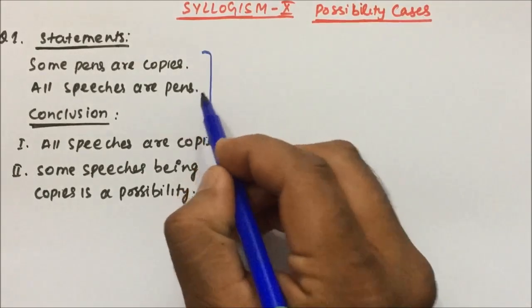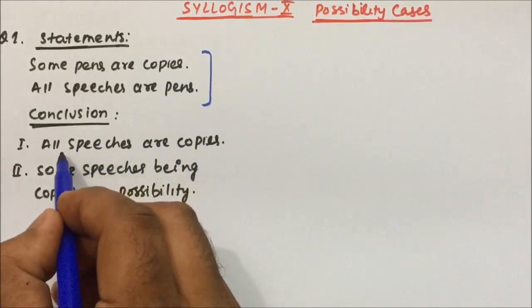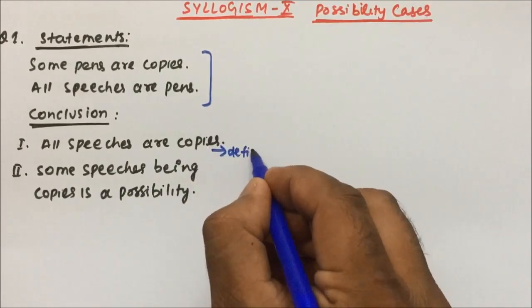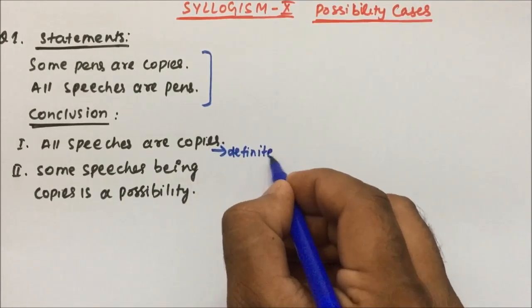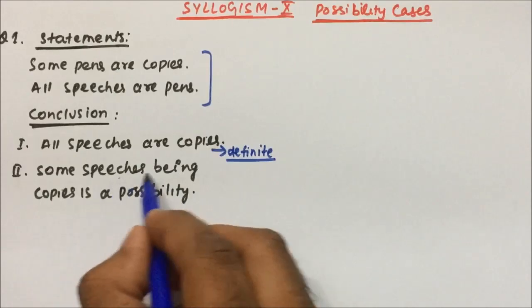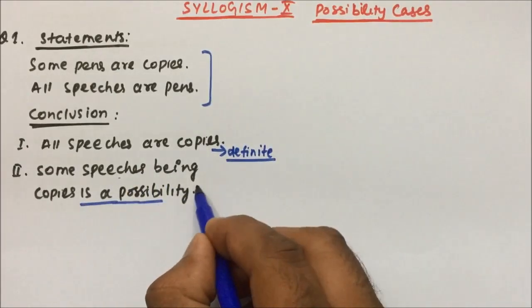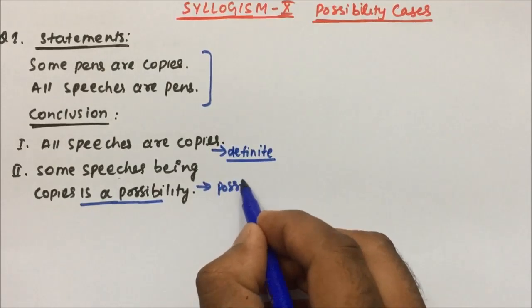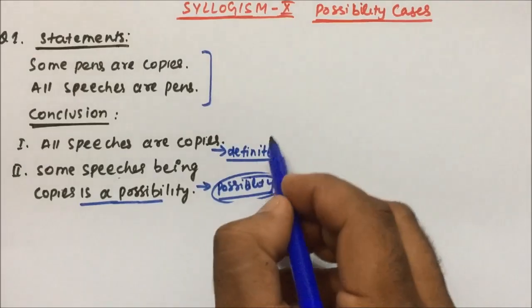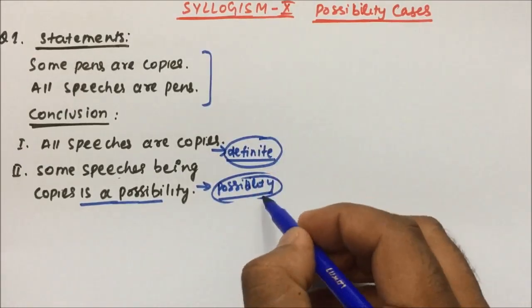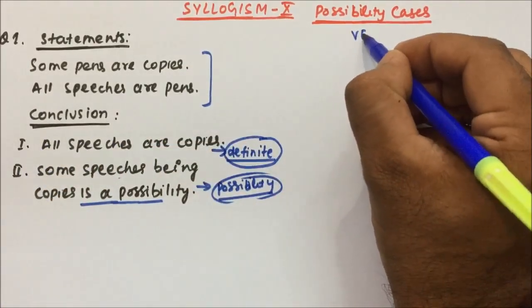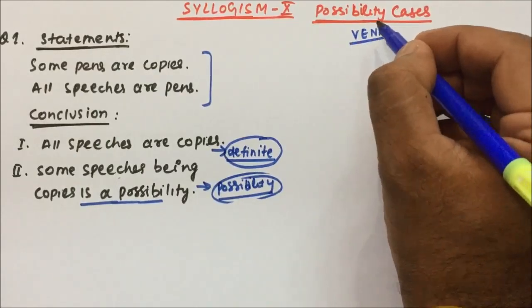So a statement is given and then followed by two conclusions. If you read conclusion one: 'all speeches are copies' — this is a definite statement; if it is definitely true then you answer, otherwise the conclusion will be false. The second conclusion is 'some speeches being copies is a possibility.' Here they are asking if there is any possibility. So let's draw the Venn diagram and see which conclusion is true and which is false.